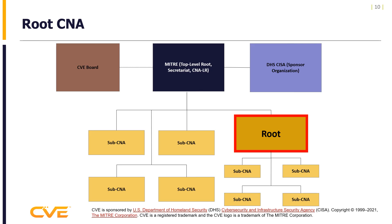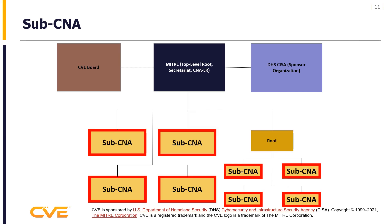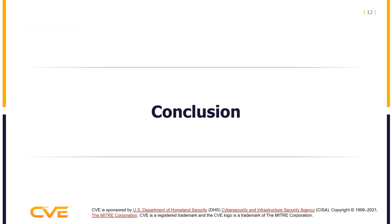Root CNAs manage a group of sub-CNAs within a distinct agreed-upon scope. Root CNAs mentor, onboard, and admit new sub-CNAs within the root CNA scope. Sub-CNAs assign CVE IDs for vulnerabilities in their distinct agreed-upon scope and submit the vulnerability information to the CVE list when they make the vulnerability public. Sub-CNAs are administered and mentored by root CNAs. This concludes our presentation.